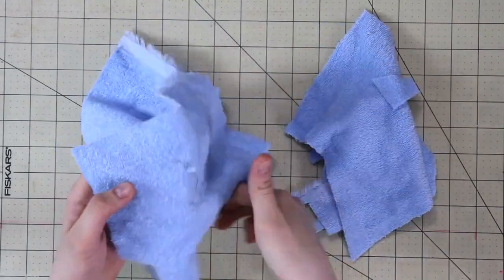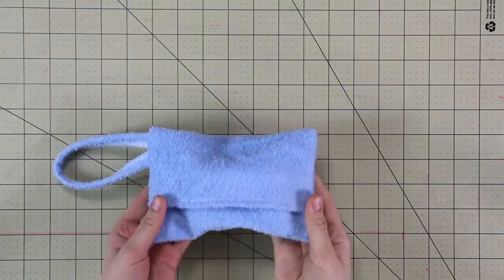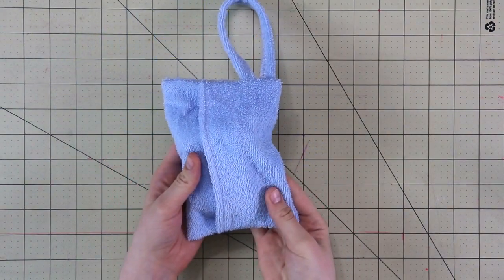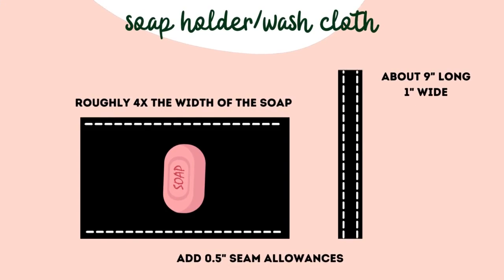To start you will need a small piece of towel fabric and depending on the size of the soap I will take roughly four times the size of the bar of the soap that you like to use and then add about an inch and a half to the top and the bottom for the length.